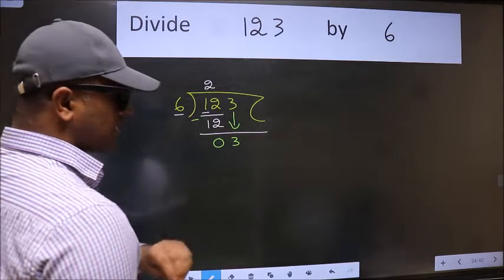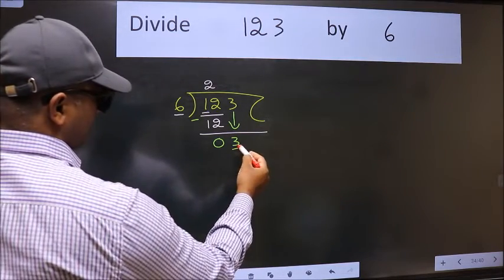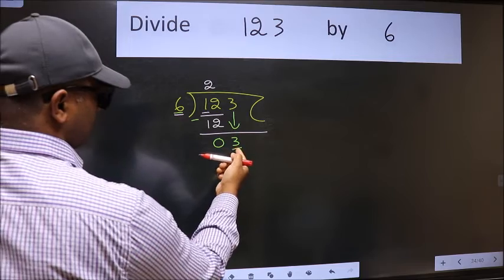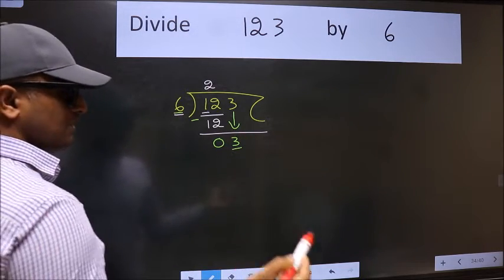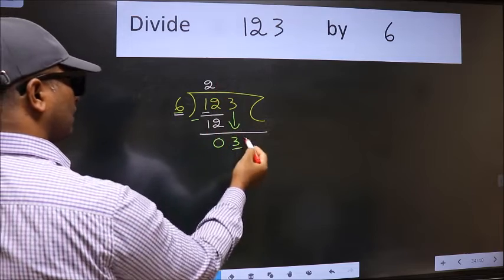And the mistake is this. Here we have 3 and here 6. 3 is smaller than 6. So what many do is they directly put the decimal point and take 0.